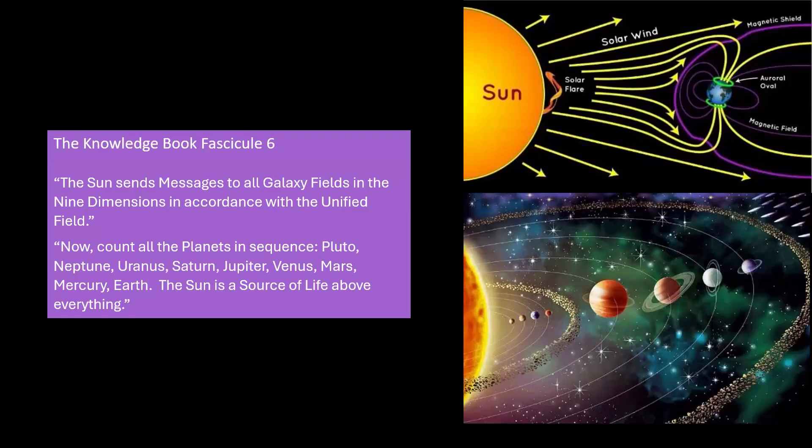The Fascicle 6 in the knowledge book states: The sun sends messages to all galaxy fields in the nine dimensions in accordance with the unified field. Count all the planets in sequence: Pluto, Neptune, Uranus, Saturn, Jupiter, Venus, Mars, Mercury, Earth. The sun is a source of life above everything.